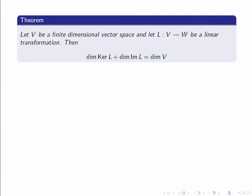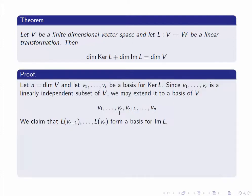So let's move on and look at the proof of this theorem. V is finite dimensional, so let N be its dimension. The kernel is a subspace of V and V is finite dimensional, so the kernel is also finite dimensional — it has a basis, say V1 up to Vr. Since this basis for the kernel is linearly independent as a subset of V, there's a result that tells us we can extend it to a basis of V: V1 all the way up to Vn. Our main claim is that the set {L(Vr+1), ..., L(Vn)} forms a basis for the image of L.